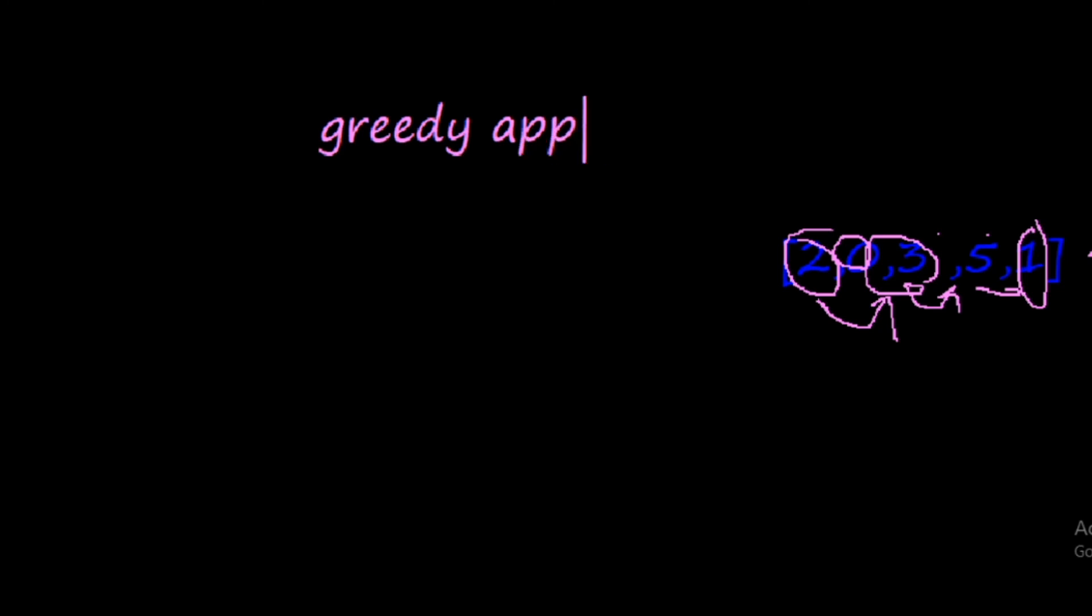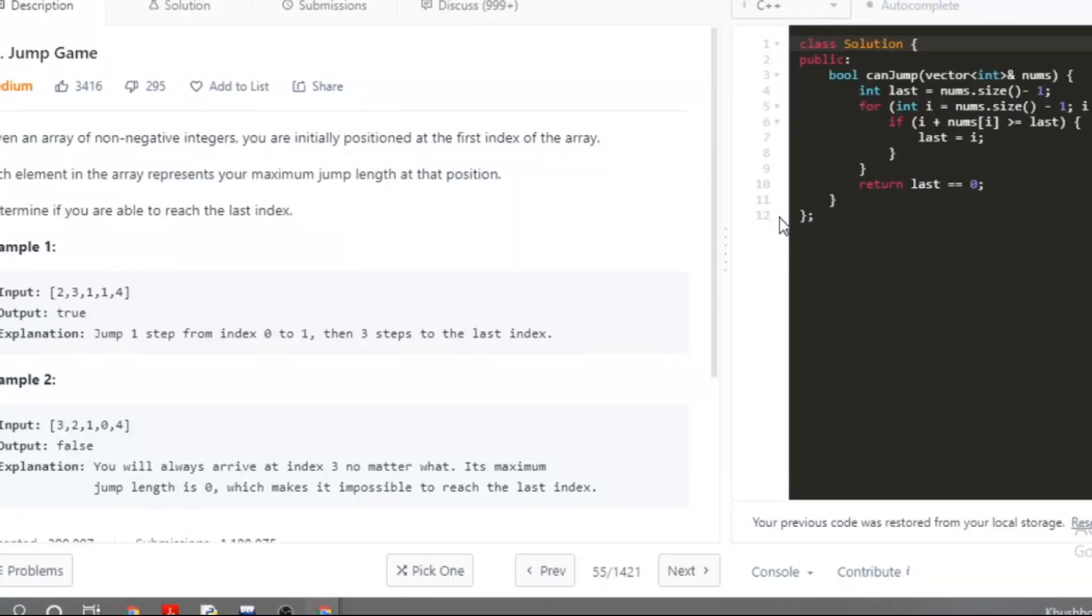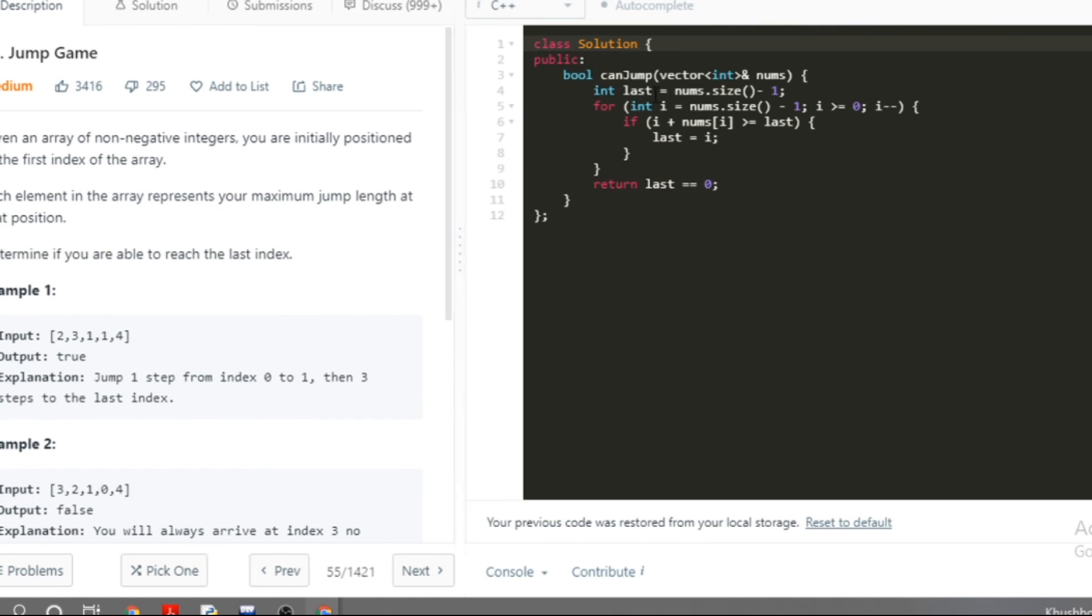Let's see the code for it. We have taken an arbitrary integer variable integer last that is nums of size minus one, then we have iterated a loop from last index to the first index. And we have said if we can reach to that index.